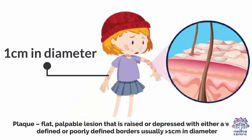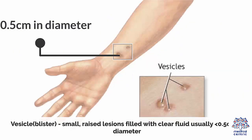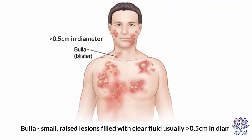Plaque is a flat, palpable lesion that is raised or depressed with either a well-defined or poorly-defined border, usually greater than 1 cm in diameter. Vesicle or blister are small, raised lesions filled with clear fluid, usually less than 0.5 cm in diameter. Bulla are small, raised lesions filled with clear fluid, usually greater than 0.5 cm in diameter.